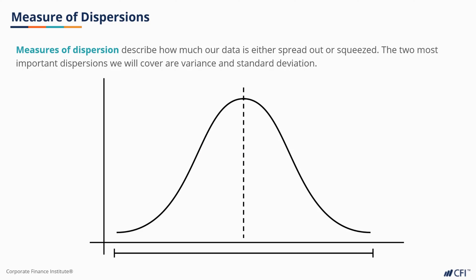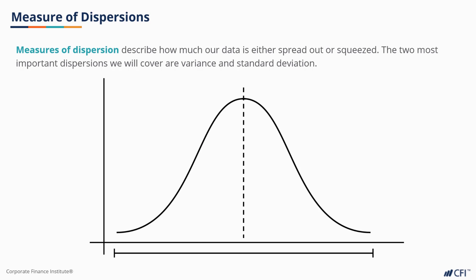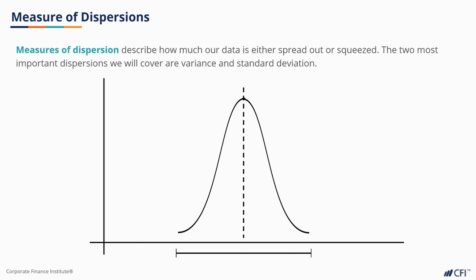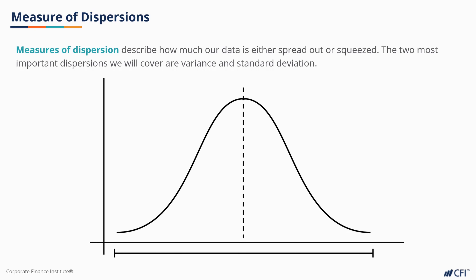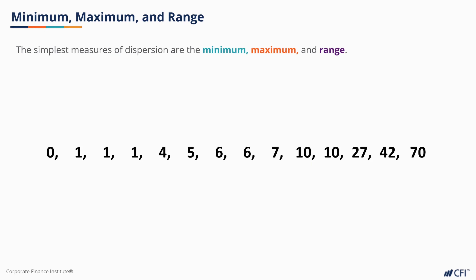Measures of dispersion, or measures of spread, help us understand how dispersed or spread out our data is, which in turn lets us know how meaningful our mean is. Put another way, how far a random result is likely to fall from the mean. If our data is widely spread, a result far from the mean becomes more likely. When making inferences, this can mean more uncertainty. The simplest measures of dispersion are the minimum, maximum, and range.